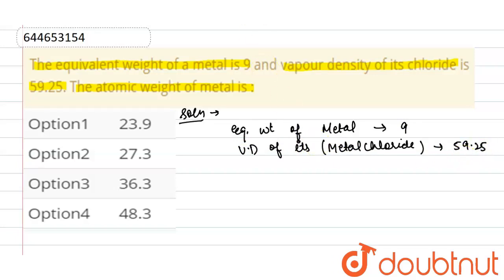Now we can calculate molecular weight of metal chloride. It can be calculated as 2 into vapor density of its metal chloride. So 2 into 59.25, it will be 118.25.